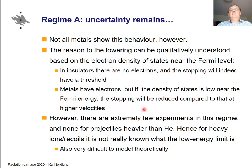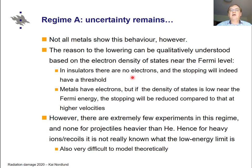However, not all metals show this weakening in experiments. For insulators it is easy to understand why there must be a threshold: insulators by definition have a band gap, and below the band gap energy there are no available electron states, so the stopping should have a threshold. Metals on the other hand do have electrons at all energies, but if the density of states is low near the Fermi energy, one can expect the stopping to be reduced compared to higher velocities where more electron states are available.